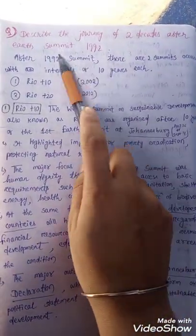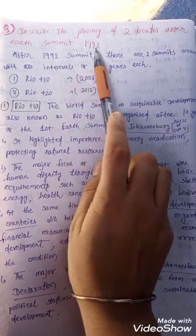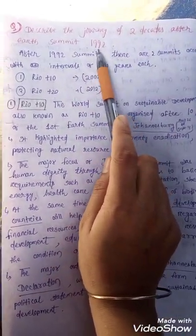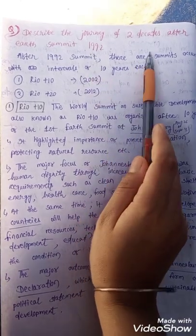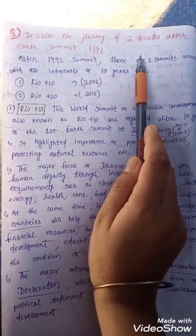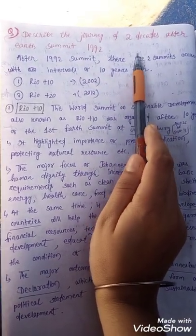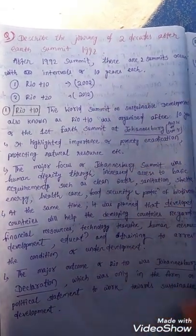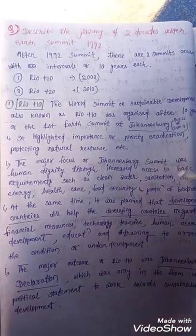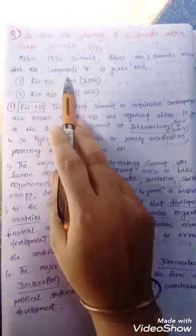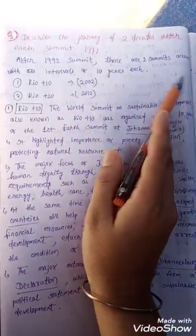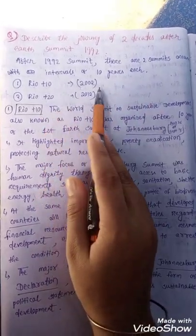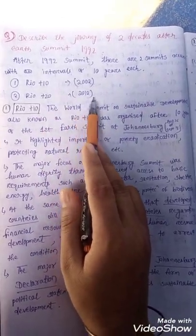Another important question from Block 2 is: describe the journey of two decades after the Earth Summit 1992. After the 1992 summit, two more summits occurred at intervals of 10 years each. Rio+10 was held in 2002, and Rio+20 was held in 2012. This is a repeated exam question, so do not skip it.